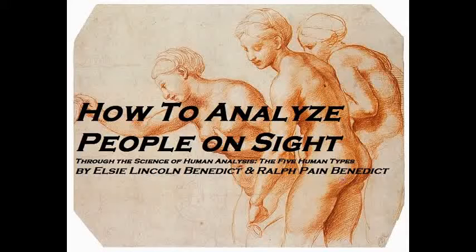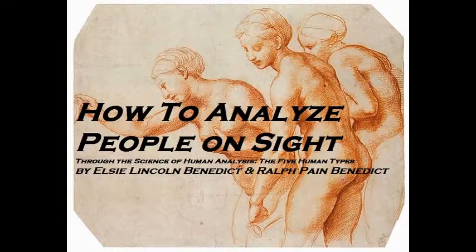How to Analyse People on Sight: Through the Science of Human Analysis, The Five Human Types. By Elsie Lincoln Benedict and Ralph Payne Benedict. This is a LibriVox recording. All LibriVox recordings are in the public domain. For more information or to volunteer, please visit LibriVox.org. Reading by Carl Manchester, 2010.